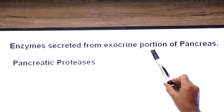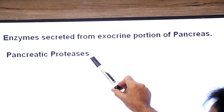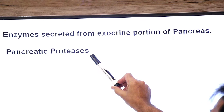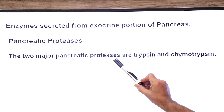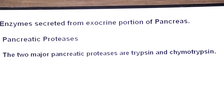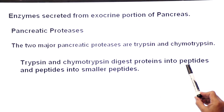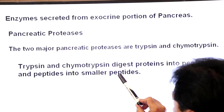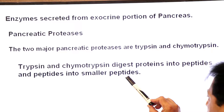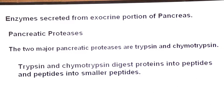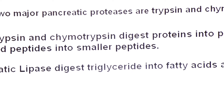Enzymes secreted from the exocrine portion of the pancreas — first we will study pancreatic proteases. Protease aese enzyme ko kaha jata hai jo protein ko break karta hai. The two major pancreatic proteases are trypsin and chymotrypsin. Trypsin and chymotrypsin digest proteins into peptides, and peptides into smaller peptides. Number two: pancreatic lipase digests triglycerides into fatty acids and glycerol.